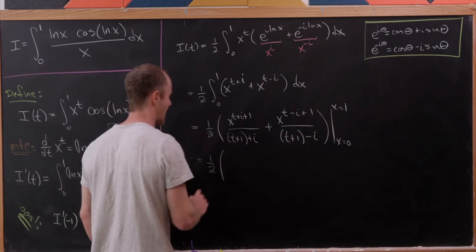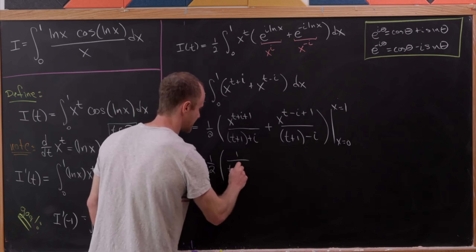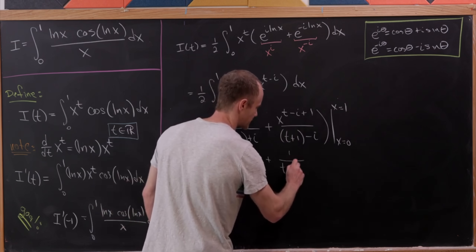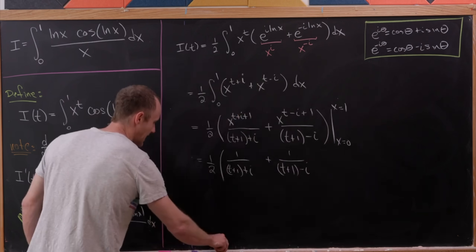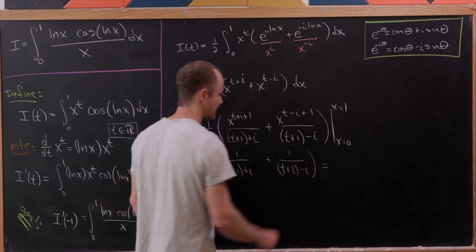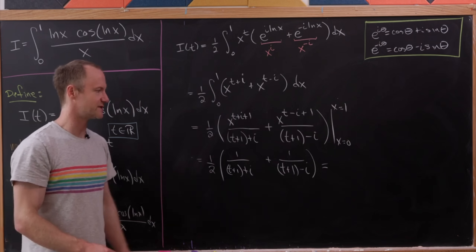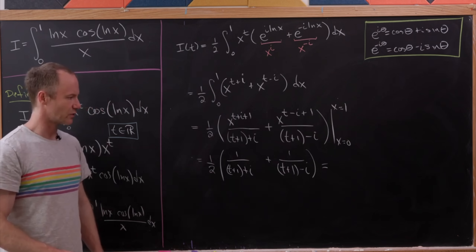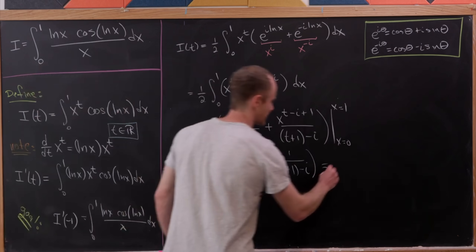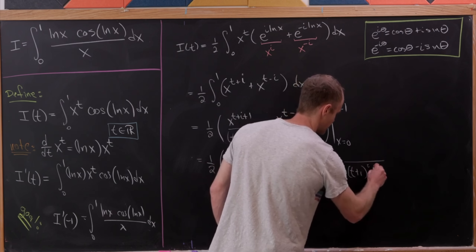That leaves us with one half times 1 over t plus 1 plus i, plus 1 over t plus 1 minus i. We give ourselves a common denominator by taking the product of those two denominators, which equals t plus 1 squared plus 1. So we have one half over t plus 1 quantity squared plus 1.